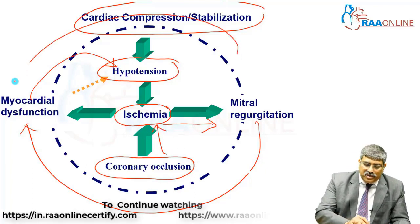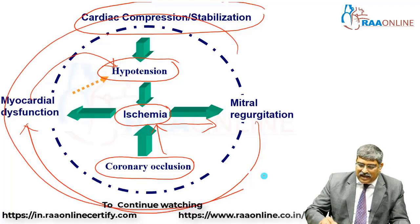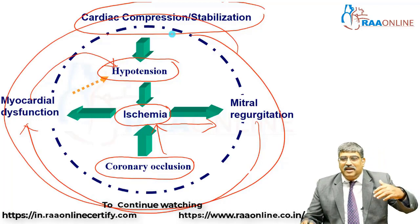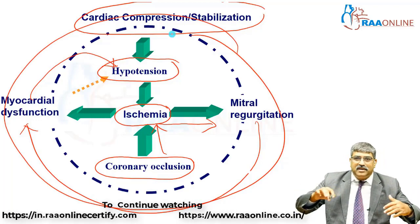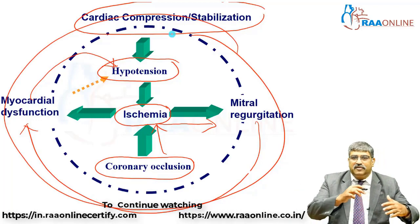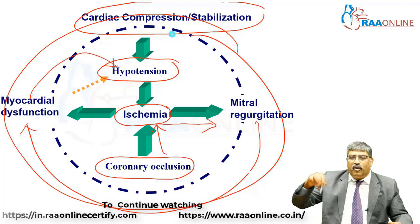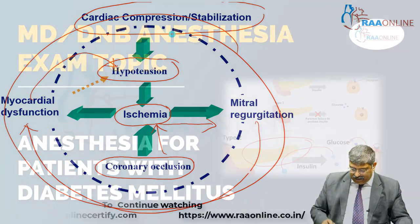So this forms a vicious cycle: hypotension, ischemia, myocardial regurgitation, dysfunction, and back to hypotension — all forming a cycle.